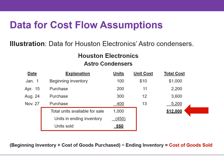So Houston sold 550 units, found by taking 1,000 and subtracting the 450 units. To determine the cost of the 550 units that were sold, we will determine the ending inventory and subtract that value from the cost of goods available for sale, which is $12,000.